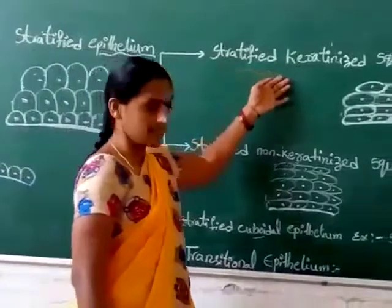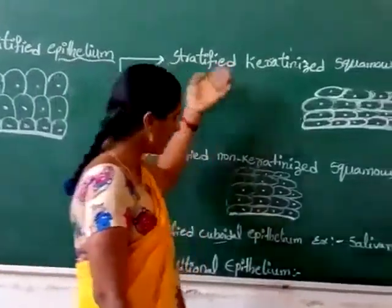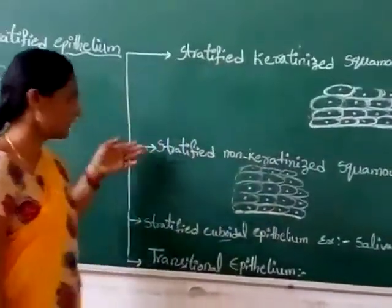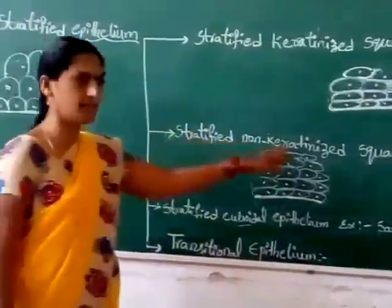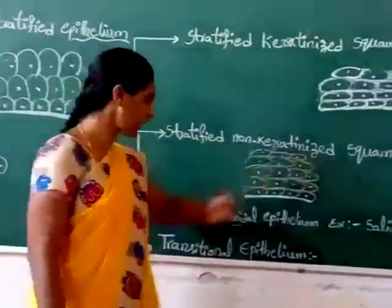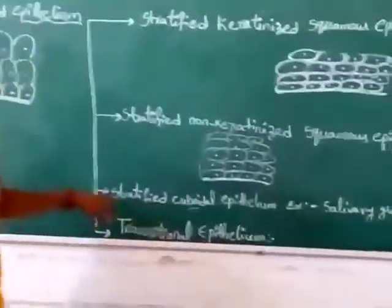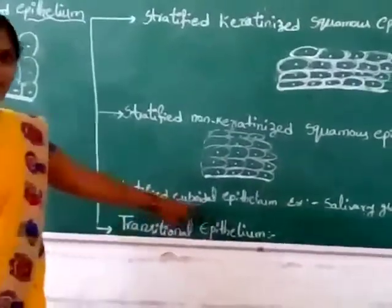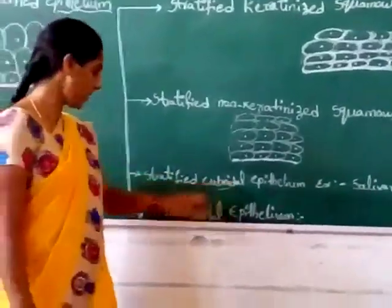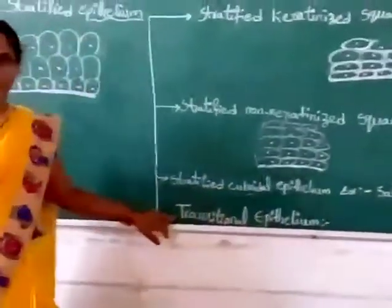The four types are: stratified keratinized squamous epithelium, stratified non-keratinized squamous epithelium, stratified cuboidal epithelium, and transitional epithelium.